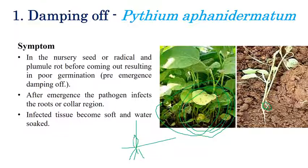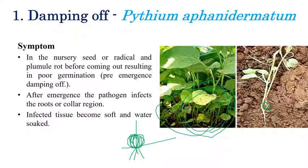The collar region is the area just above the soil. Even if the seedling emerges from the soil, Pythium aphanidermatum and other species can infect it especially at the collar region. A very common symptom is that infected tissues become soft — water-soaked lesions can be observed. The main symptom is softening of the collar region, which causes the plant to lose stability and lodge.